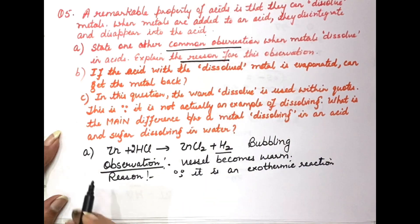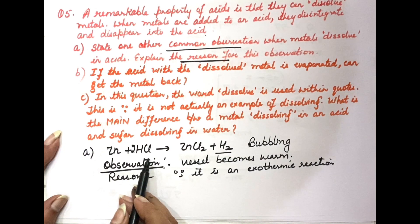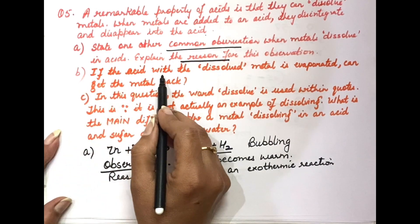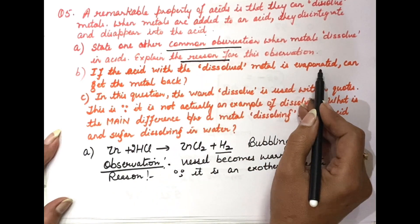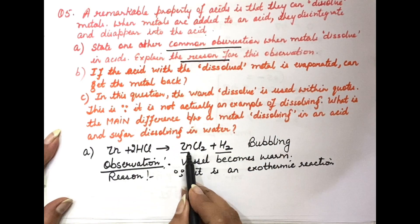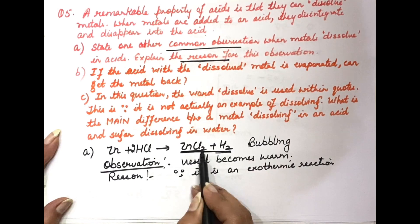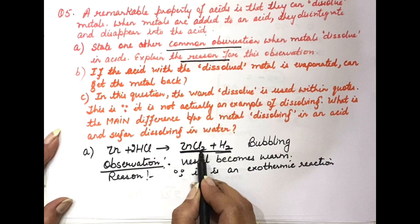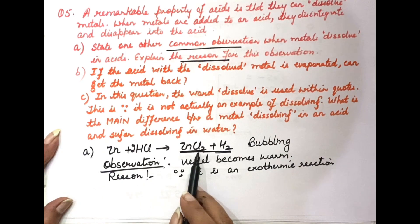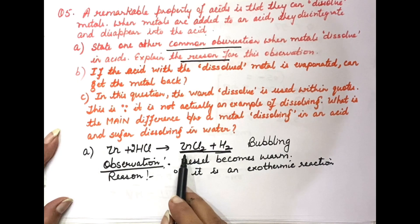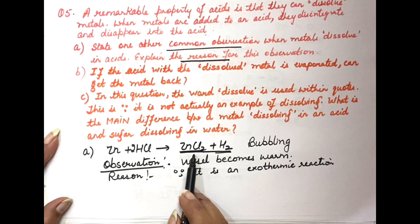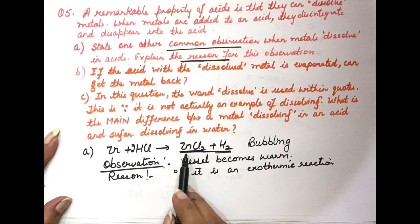B part: if the acid with the dissolved metal is evaporated, will the metal be recovered? No — when we evaporate the solution, hydrogen has already evolved out. Zinc chloride will not disintegrate and we will not get zinc metal back. The metal is present as part of a salt solution, so evaporating it will not recover the original metal.